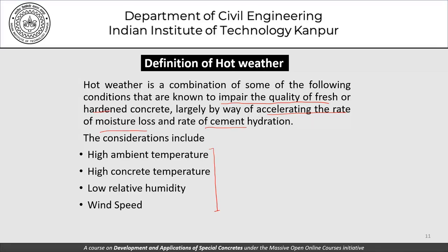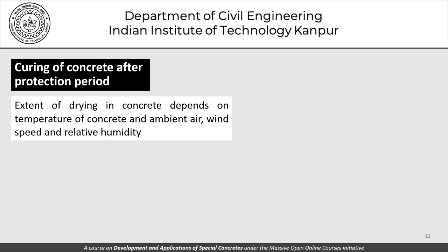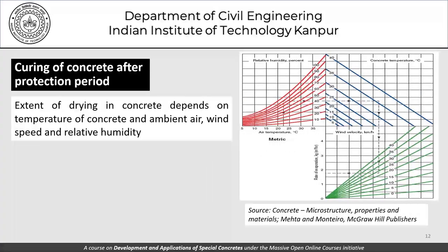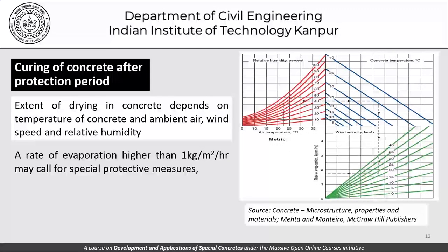The extent of drying in concrete — the loss of water through the surface, measured in kg per square meter per hour — depends on the concrete temperature, ambient air temperature, wind speed, and relative humidity. A rate of evaporation higher than 1 kg per square meter per hour calls for special protective measures. We use a nomogram: enter with air temperature, go up to relative humidity, turn right to the concrete temperature, come down to the wind velocity, and read off the rate of evaporation.